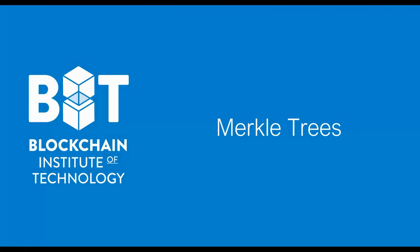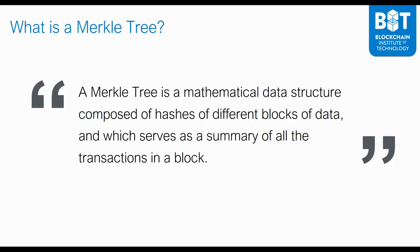Let's look at the concept of Merkle trees, and specifically how they are used extensively in creating the Bitcoin blockchain. To begin, let's look at a definition of what a Merkle tree is. A Merkle tree is a mathematical data structure composed of hashes of different blocks of data, and which serves as a summary of all the transactions in a block. Another way of calling a Merkle tree is what's known as a hash tree — it's actually a tree composed of hashes.